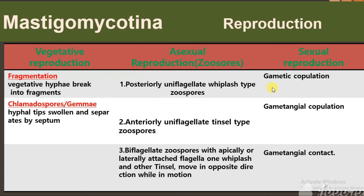Sexual reproduction occurs by gametic copulation, gametangial copulation, and gametangial contact. These types of sexual reproduction have been discussed in this video lecture in detail.